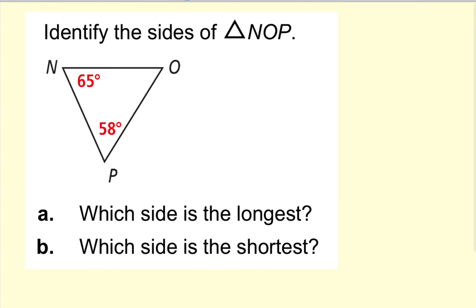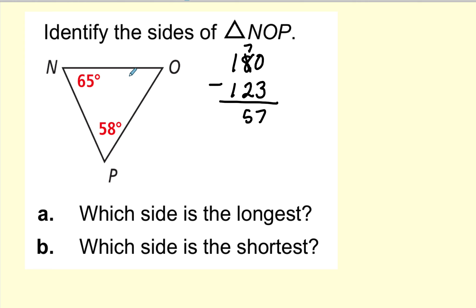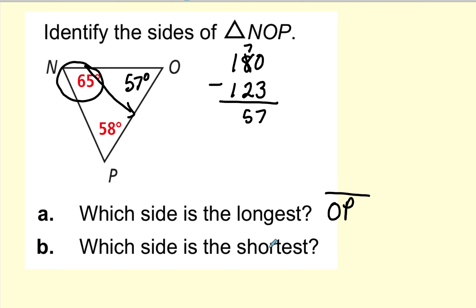Let's identify the longest side and the shortest side. First I figure out the third angle: 180 minus the sum of the other two (which is 123) gives 57 degrees. Now, the longest side is opposite the largest angle, which is segment OP — OP will be the longest. The shortest side is opposite the smallest angle, which gives us segment NP as the shortest.